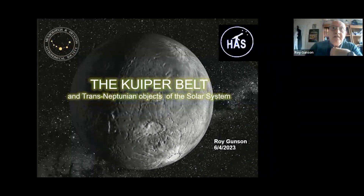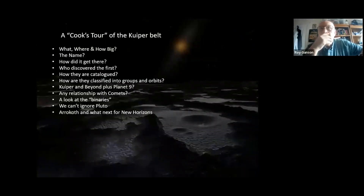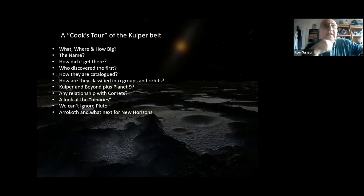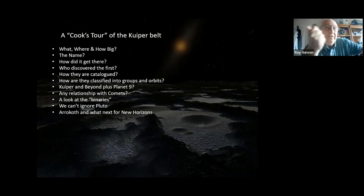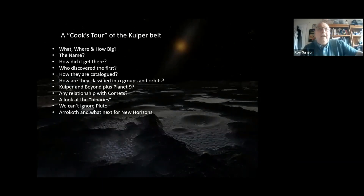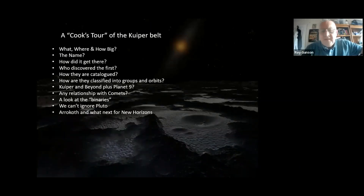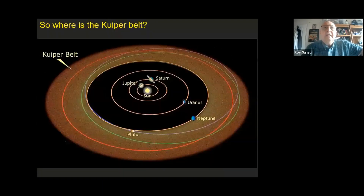What I'm going to talk about is basically what I call a Cook's tour of the Kuiper Belt — dashing through what it is, where it is, how big it is, how it got its name, how it got there, who discovered the first object, how they're catalogued and classified into groups and orbits, Kuiper and beyond, plus Planet Nine, the relationship with comets, a quick look at binaries, Pluto, Arrokoth, and what's next for the New Horizons probe.